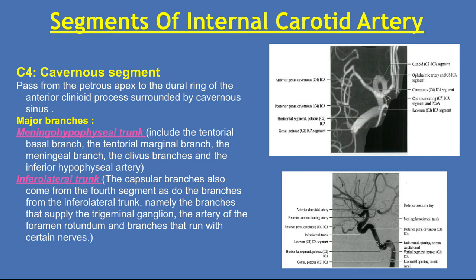Inferolateral trunk: the capsular branches also come from the fourth segment, as do the branches from the inferolateral trunk — namely, the branches that supply the trigeminal ganglion, the artery of the foramen rotundum, and the branches that run with certain nerves.